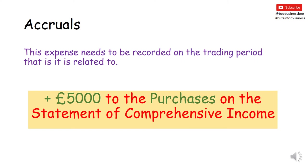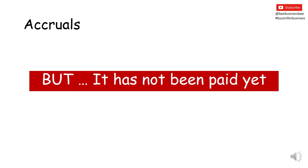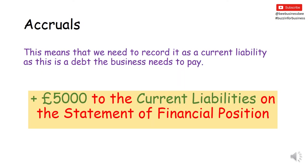We need to add the £5,000 onto our purchases section of the Statement of Comprehensive Income because it was a purchase made in that trading period. But, and this is really important, we haven't actually paid for it yet and we need to make sure we record that. So we need to record it as a current liability. Current liabilities are debts we have to pay within the short term — within a year. So we add the £5,000 to our current liabilities section on our Statement of Financial Position, showing that we still owe £5,000 in the short term.